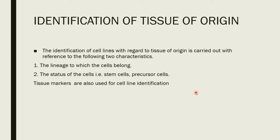Tissue of origin can be determined by determining the lineages and the status of the cell — whether they are stem cells or precursor cells. Stem cells have a self-renewable capacity and can give rise to various types of cells. Precursor cells have lost the self-renewable capacity and can differentiate into a particular type of cell. Various types of tissue markers are used in this case.